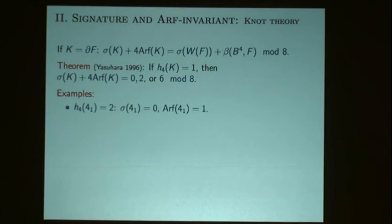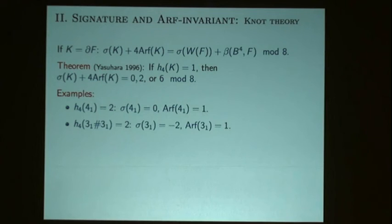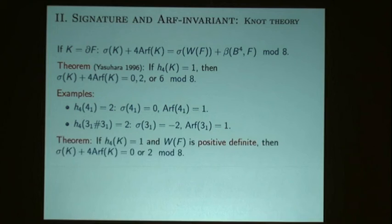A couple of applications: the figure-eight knot doesn't bound a Möbius band because if you compute the signature plus four times the Arf invariant you get four mod eight. And the granny knot has a similar calculation. So this formula gives examples right away.